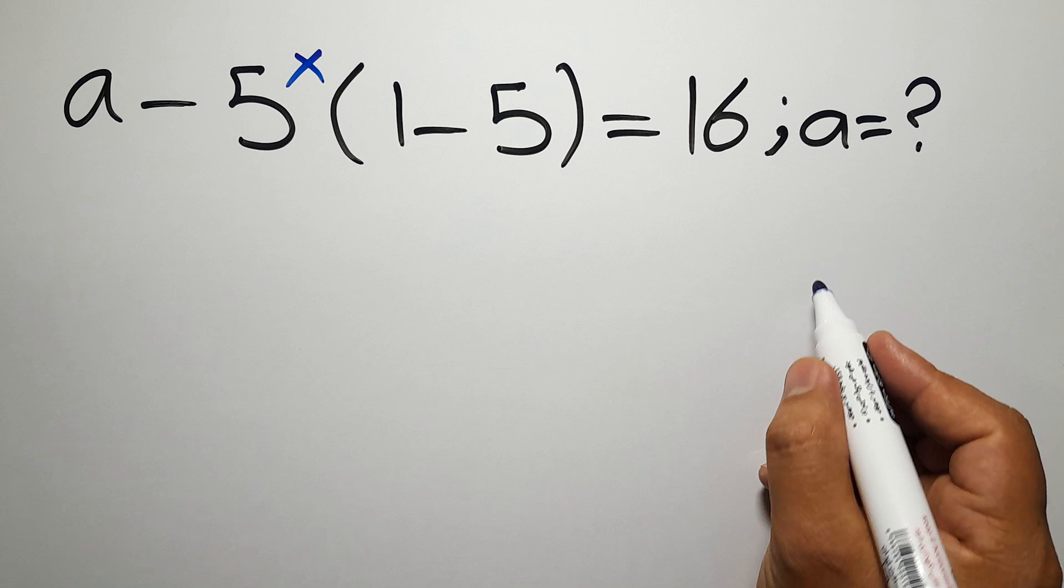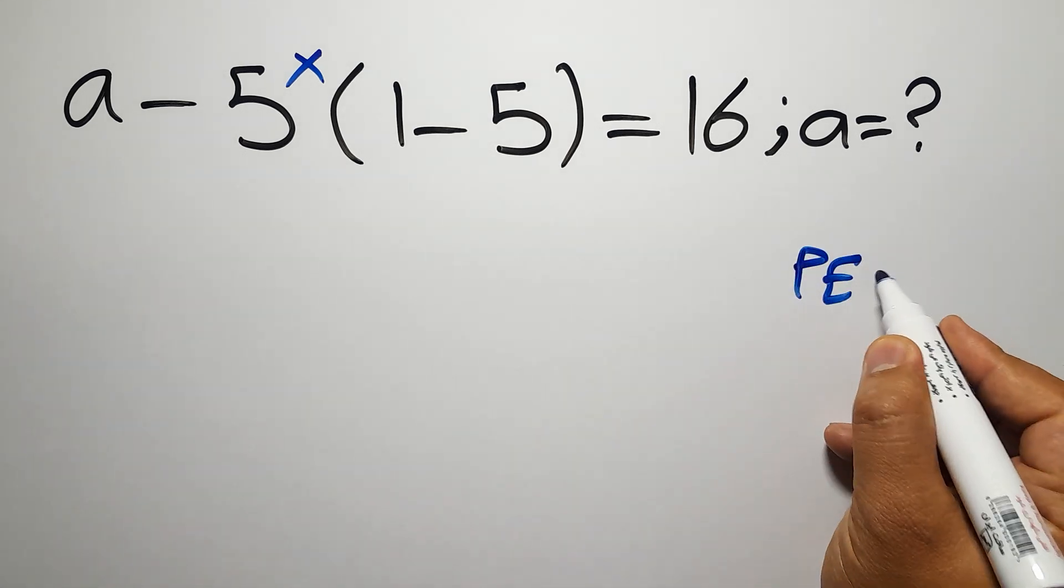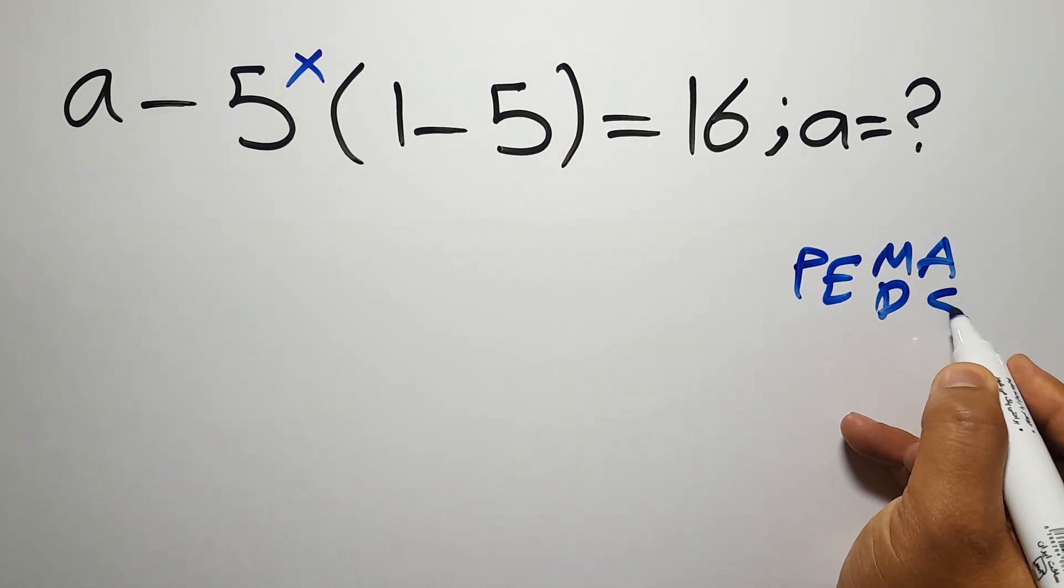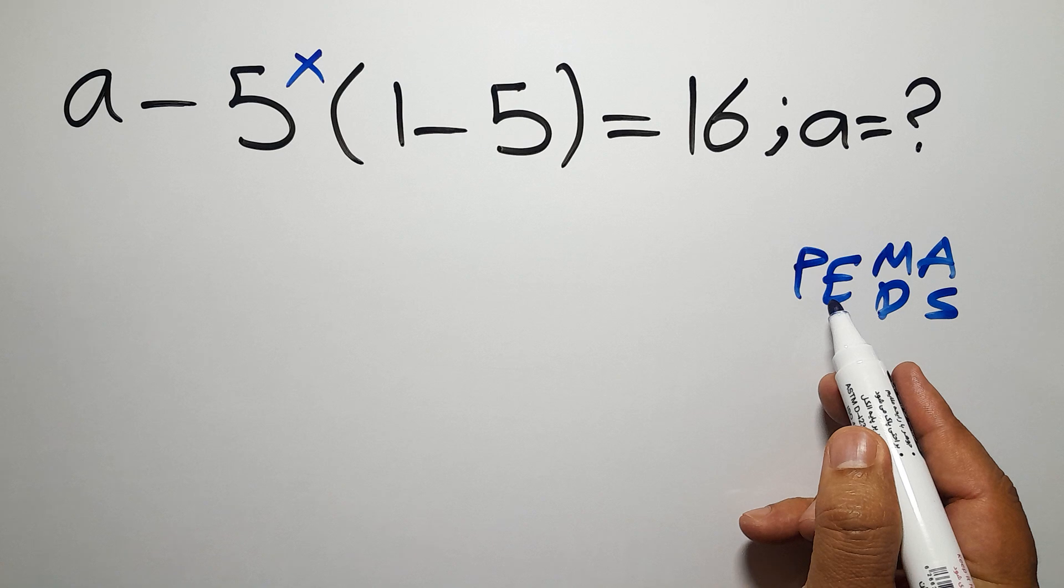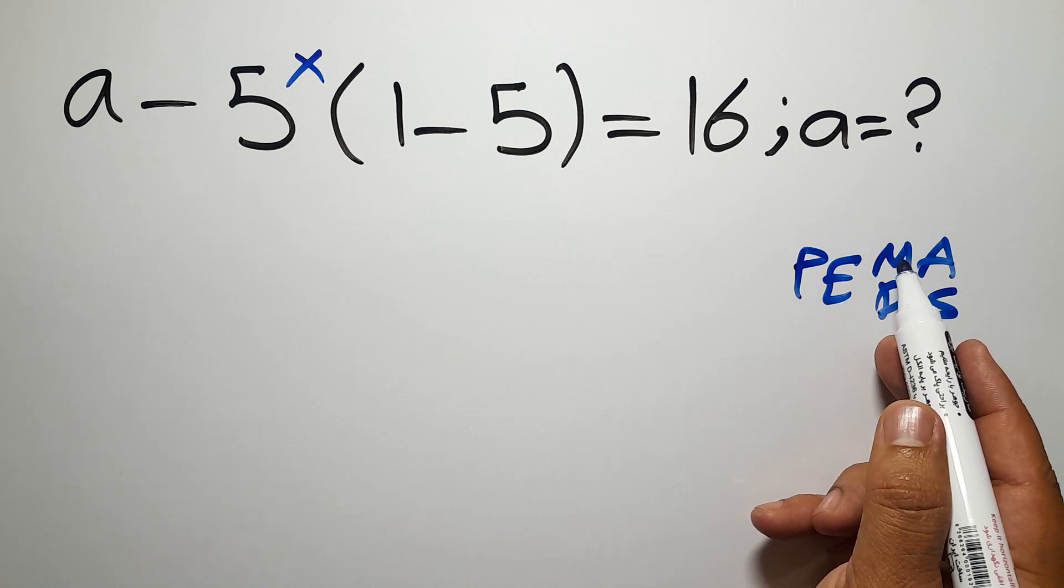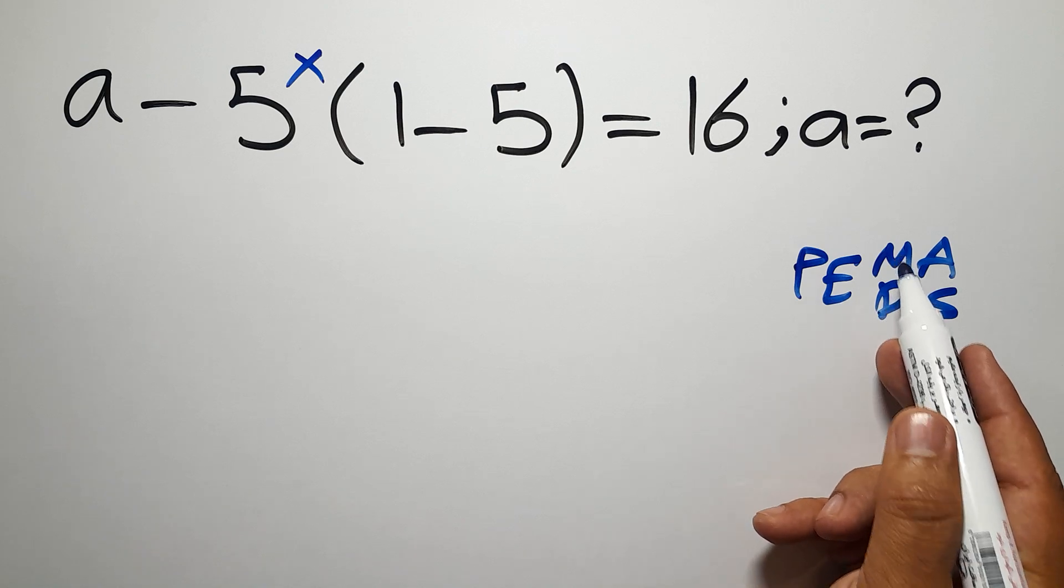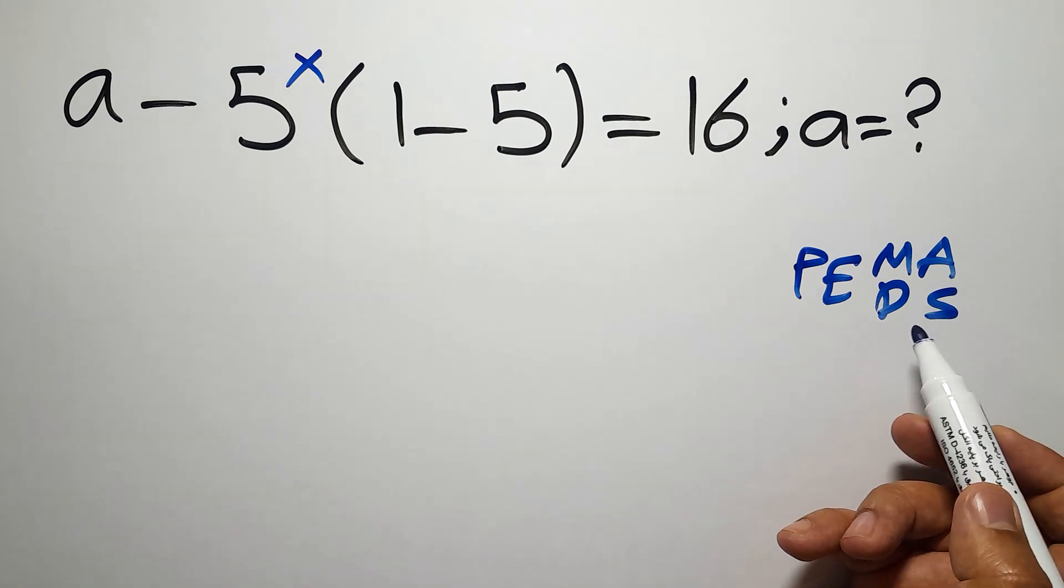According to the order of operations, which is PEMDAS, P stands for parentheses, E stands for exponents, M and D stand for multiplication and division, and A and S stand for addition and subtraction.